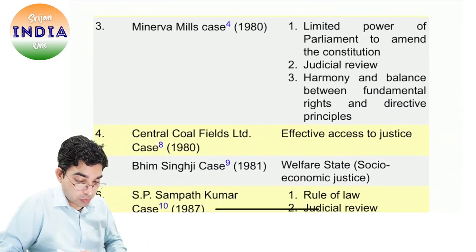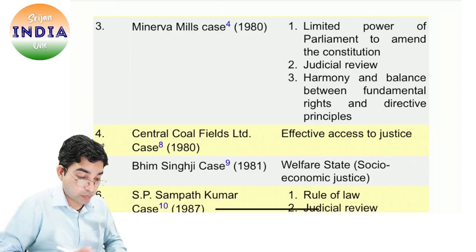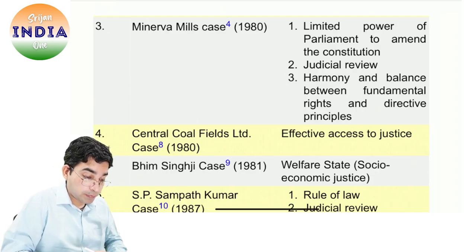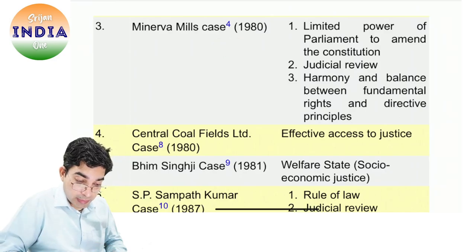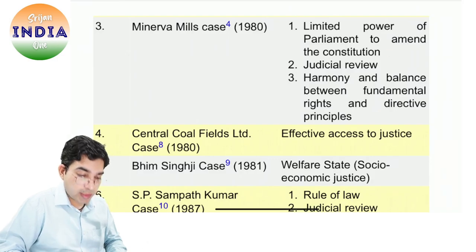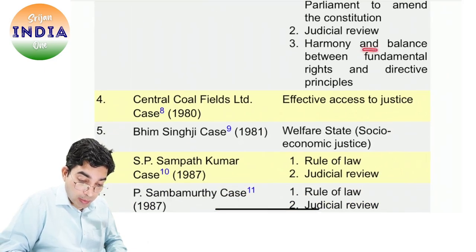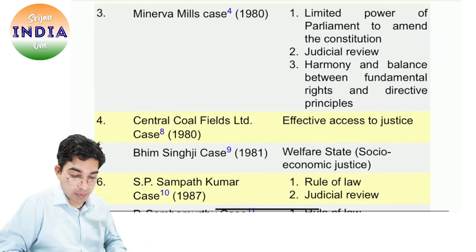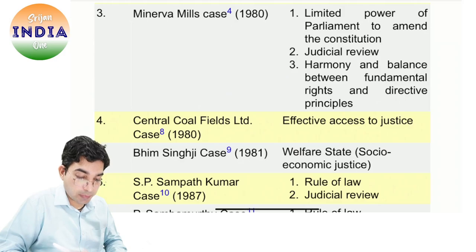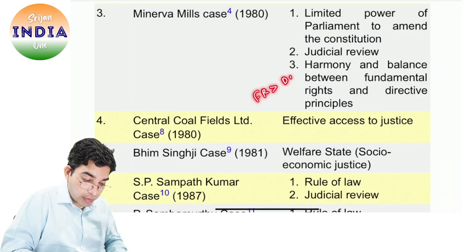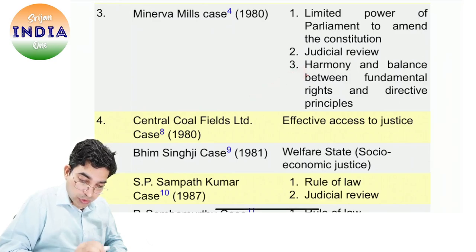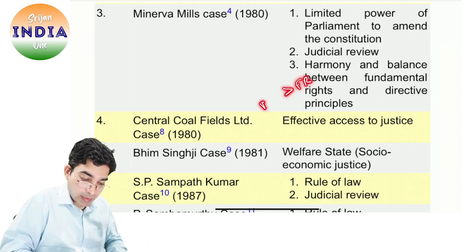Ye sab cheezein kahan pe aayin — Indira Nehru Gandhi case 1975 mein — kyunki yahan ek change ye bhi kar diya gaya tha ki Supreme Court judicial review nahi le payegi, to court ne kaha nahi, judicial review to zaroori hai, because we are the custodian of the constitution. Phir aata hai Minerva Mills case 1980 — limited power of Parliament to amend the constitution, parliament constitution ko poora nahi badal sakti — judicial review hoga, harmony and balance between fundamental rights and DPSP. Fundamental rights bhi important hain, DPSP bhi important hain.